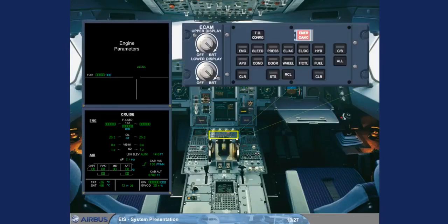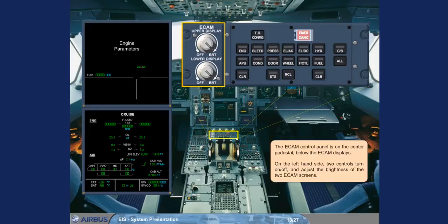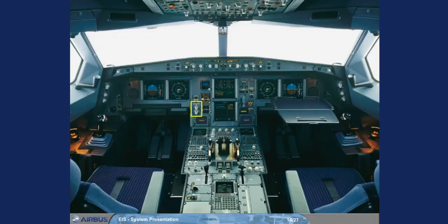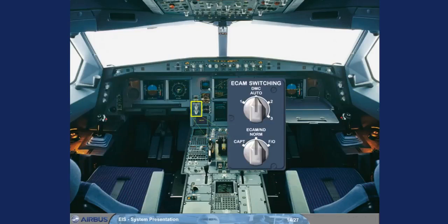The ECAM control panel is on the center pedestal, below the ECAM displays. On the left-hand side, two controls turn on and off and adjust the brightness of the two ECAM screens. Just to the left of the ECAM lower screen is a switching panel for use in abnormal situations to restore data to the ECAM displays. You will use this panel in the EIS reconfiguration module.